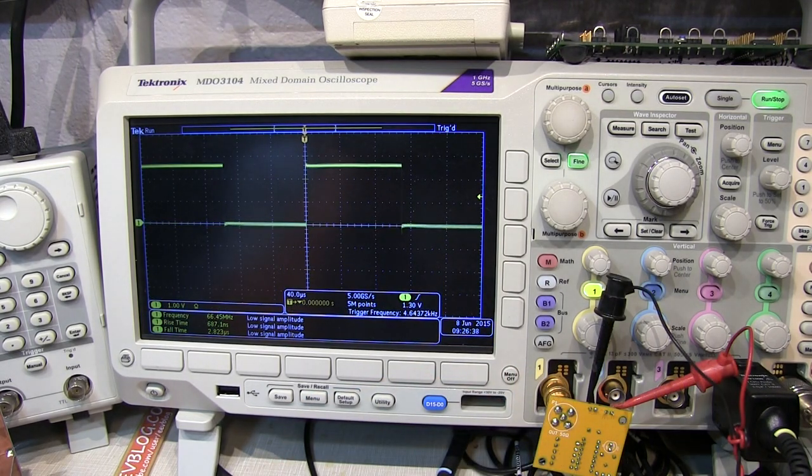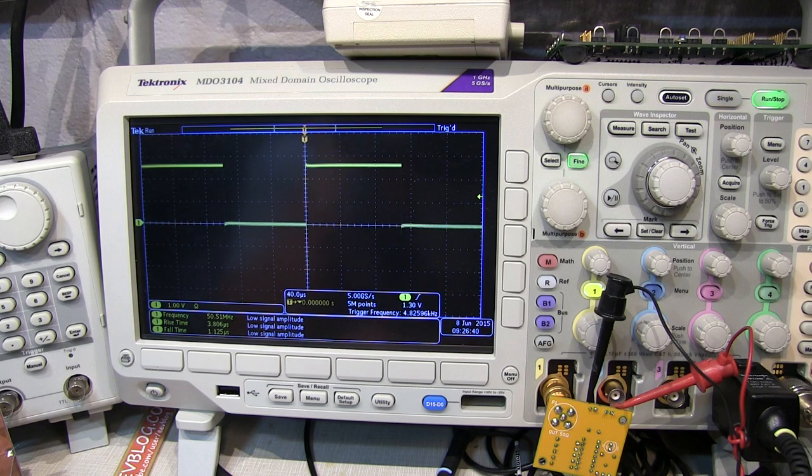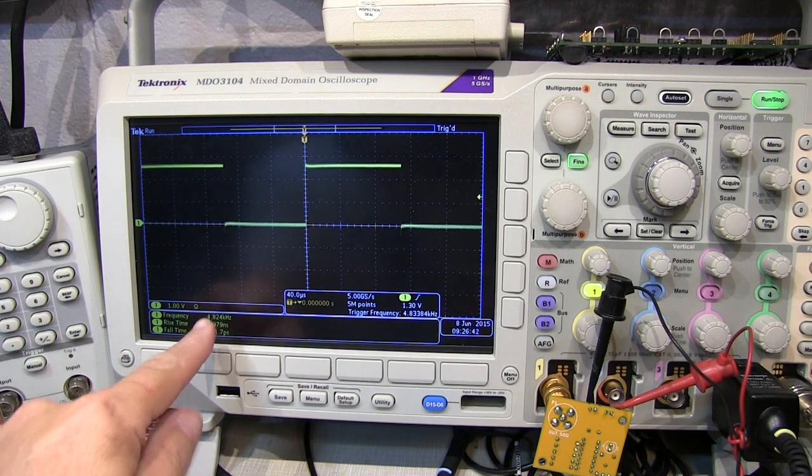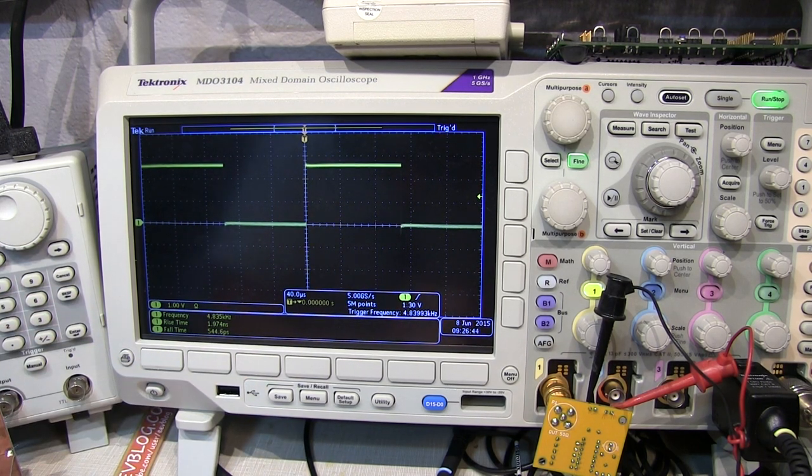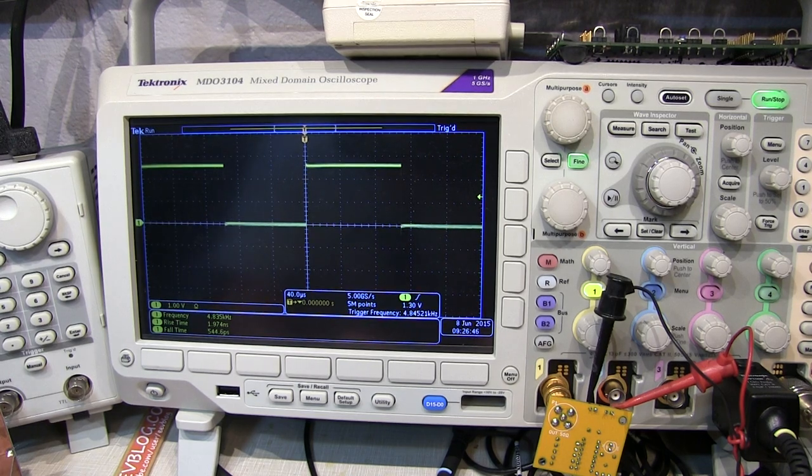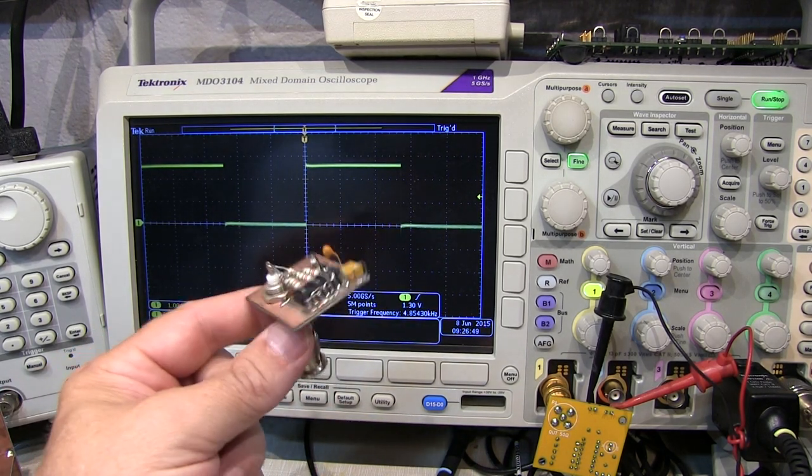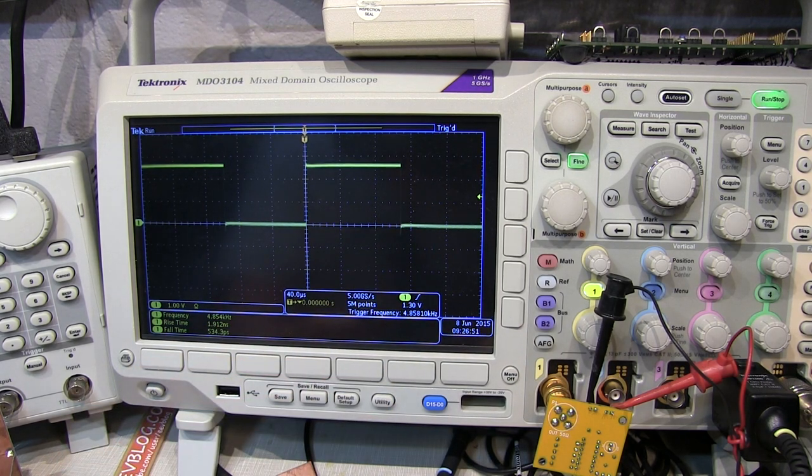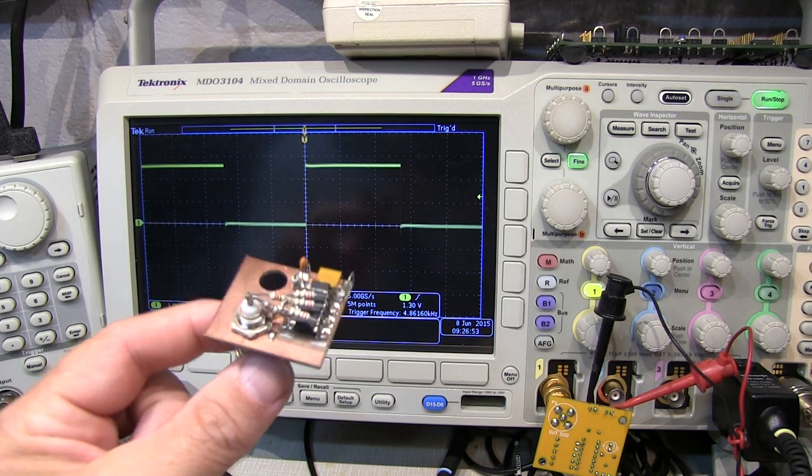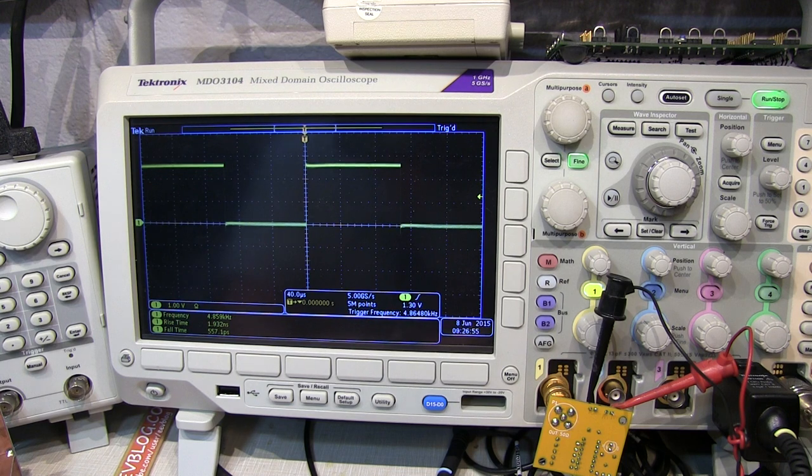Let me flip the power on here and see what we've got. So it looks like we're running, frequency-wise, about 4.8 kHz. And I've had a lot of people who built this circuit say the same thing, that they built it using the same components that I built on this, and they were seeing a little bit lower operating frequency. I was seeing about 6 kHz. This one's running about 4.8 kHz.